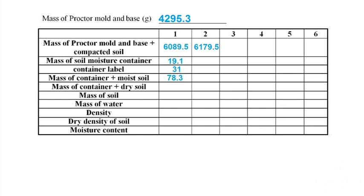You will need to repeat the test until you find the maximum density, each time increasing the moisture content by 2–3%. Since the mass and volume of the mold remain constant, you will know that you've found the maximum when the total mass of the compacted sample plus the mold begins to drop. In our case, we found the maximum density at test number 4; however, we needed test number 5 to confirm that the total mass beyond this was dropping.